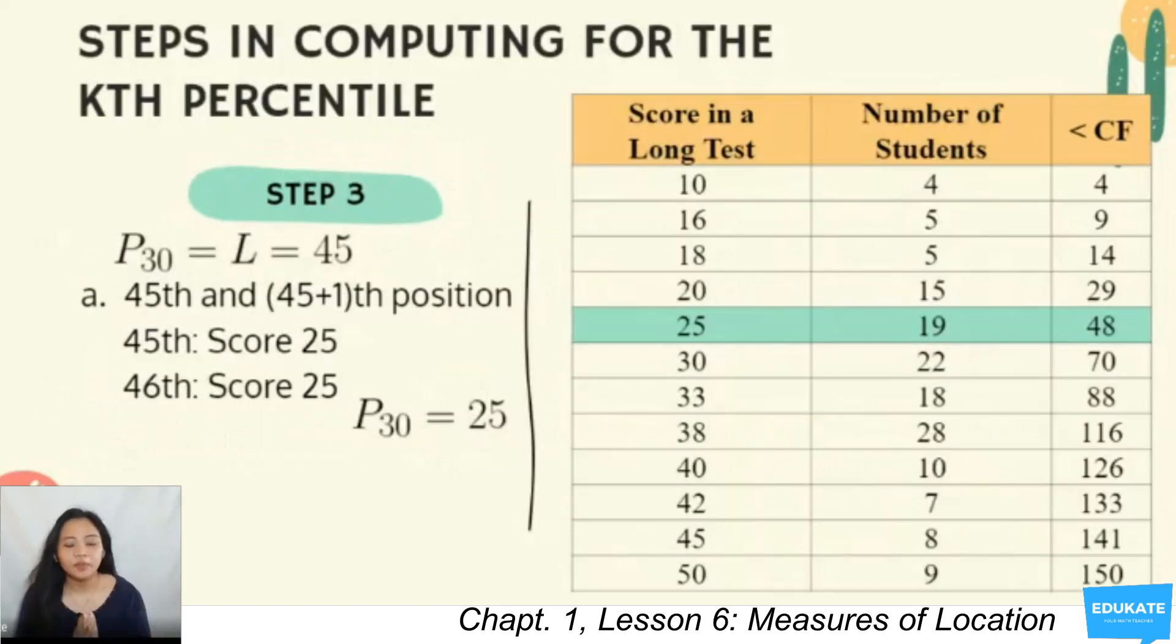As we can see here, P30 is equal to the location 45. We have looked for the 45th and 45th plus 1 position or 46th. Your 45th and 46th position can be found using the less than cumulative frequency column. You're going to look there: 4, 9, 14, 29, 48th. Recalling, if you have a less than cumulative frequency of 4, it means that 4 data are falling in that first row. If you have 9, that means 9 data are falling in that second row. If we have 45th and 46th, we are sure that that location of the data falls under less than cumulative frequency 48th.